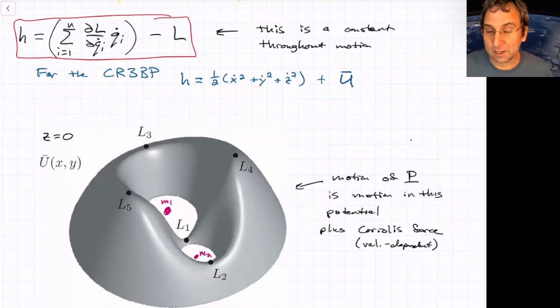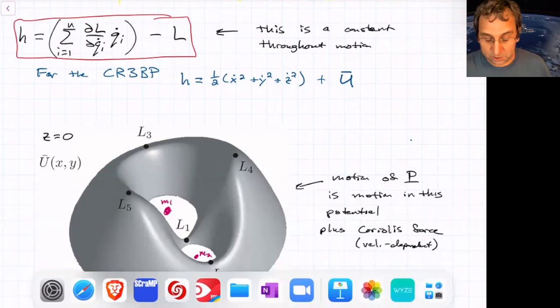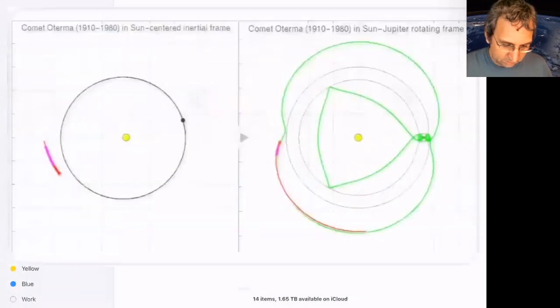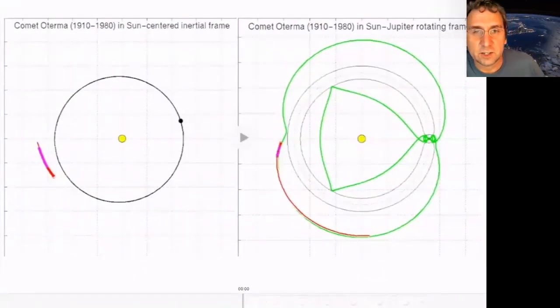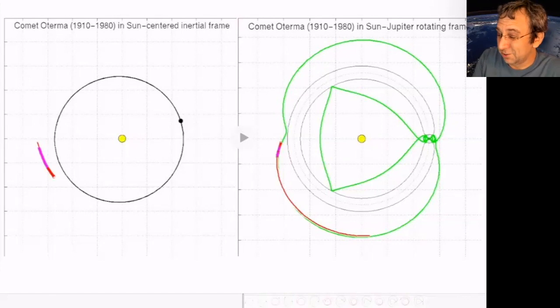Just to give you an example of that, the thing that got me started on this was some initial work on comet motion. And there was a comet called Oterma that did some interesting things when it passed by Jupiter. So I think I've got a video here. On the left, this is showing the inertial frame. And on the right, this is a rotating frame. Forget about the green trajectory for now. Just look at the red one.